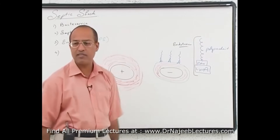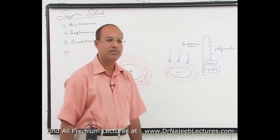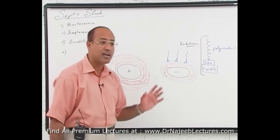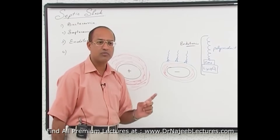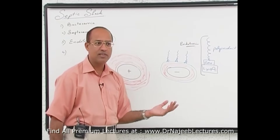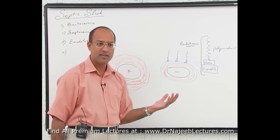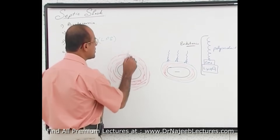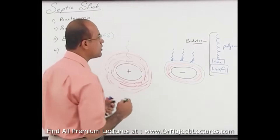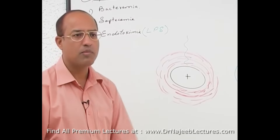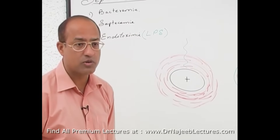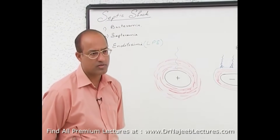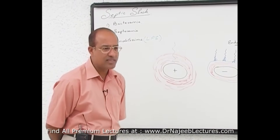The polysaccharide portion is unique to a particular group of gram-negative bacteria. Gram-positive bacteria and fungi do not have true endotoxins. Gram-positive bacteria do have some similar molecules called endotoxin-like molecules, but gram-positive bacteria do not have any true endotoxins.